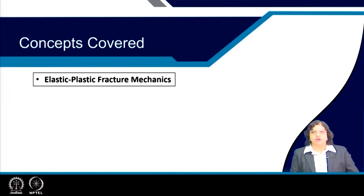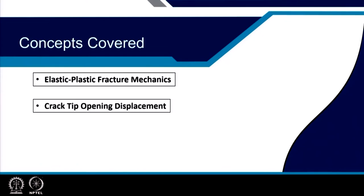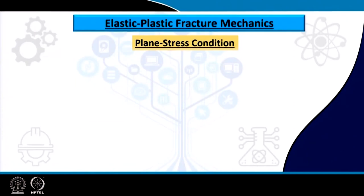We will be talking about Elastic Plastic Fracture Mechanics. So far we have seen about the linear elastic fracture mechanics, and from there we are moving towards the elastic plastic fracture mechanics, which is particularly valid for materials which undergo some amount of plastic deformation prior to failure. To find out the fracture mechanics behavior of such material, we will evaluate it through the crack tip opening displacement, and the J integral.